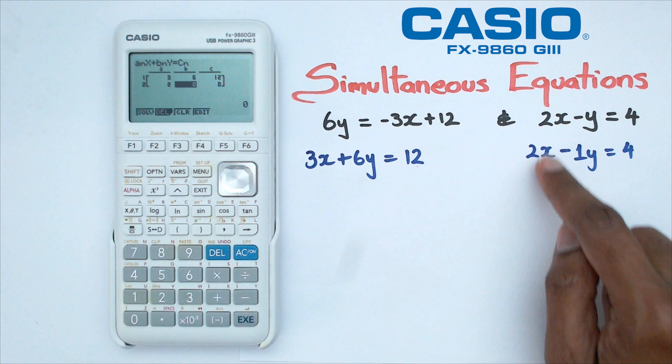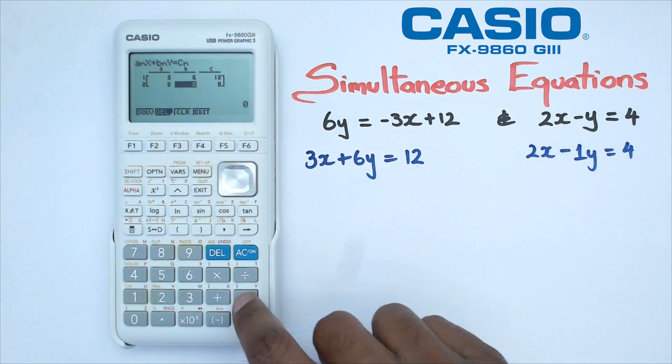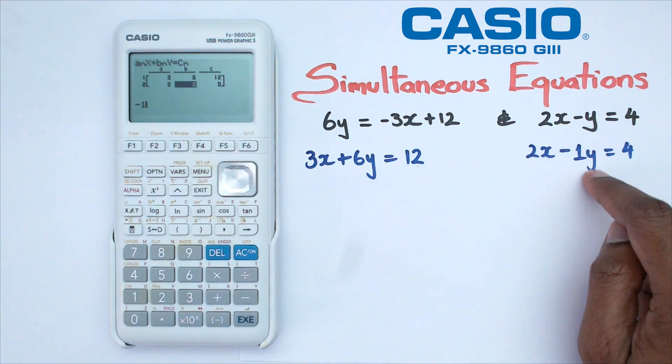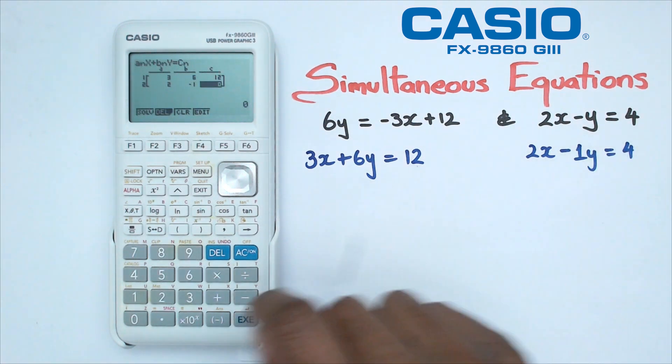but except I've got to keep in mind that it's actually negative 1. So I'm going to put negative 1 as the coefficient of Y. And finally, the last constant, which equals to 4.